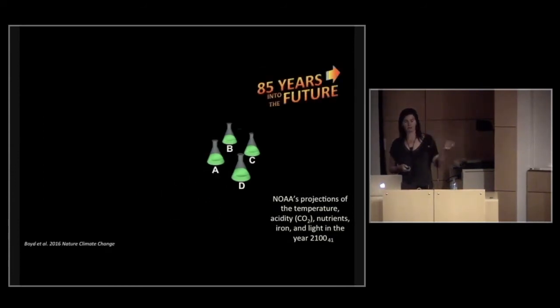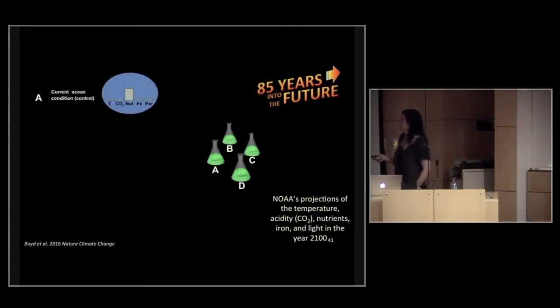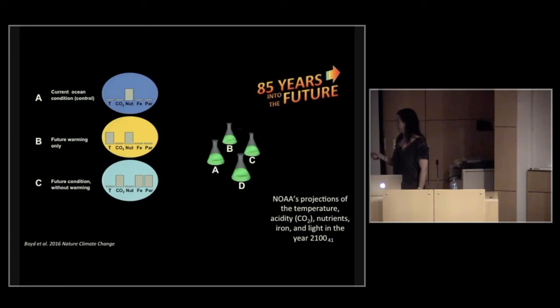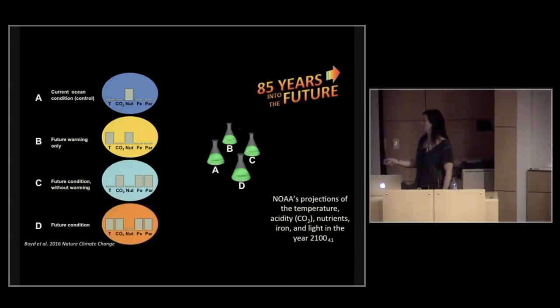We take these experiments, A through D, and we'll walk you through them here. Our first one is our current ocean condition. The temperature, I have five parameters that we monitored or we modified through these different experiments. Temperature is our first. CO2 or acidity. Nutrients. Iron is the fourth. And last is PAR, which is actually the light, how much light they're receiving. So here's our current or our control condition. Cell state B, we're going to look at future warming only. So we take our current condition and we just heat it up a bit. And we're going to heat it up at the same amount that's going to happen in 2100. Cell state C, we're looking at the future condition without warming. So now we're going to increase everything as it will be in 2100. But we're going to leave the temperature low because, remember, our dominant physiological control is temperature. And last, of course, is our final complete future condition. So we're modifying temperature, CO2, nutrients, iron, and light.